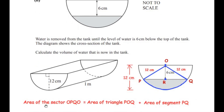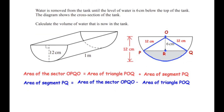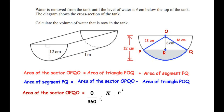The area of sector OPQO equals the area of triangle POQ plus the area of segment PQ. Rearranging, area of segment PQ = area of sector OPQO minus area of triangle POQ. The formula for area of sector is (θ / 360) × π × R². Here θ is the central angle POQ and R = 12cm. To find θ, we consider right-angled triangle POR, where OP = 12cm and OR = 6cm, with angle POR labelled alpha.